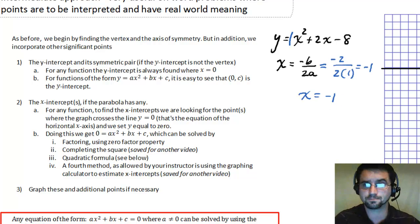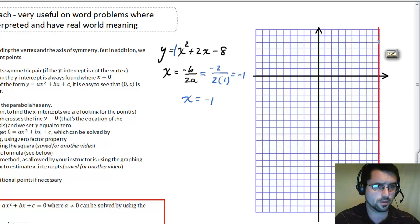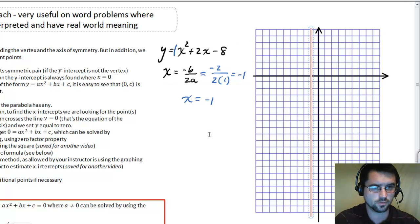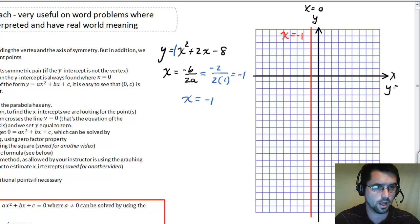So the equation of the axis of symmetry is x equals negative 1. So that's a vertical line, and I have a vertical line already prepared. It's right here, and I'm going to move it to where x equals negative 1. There it is. Right there, every point on that line, x equals negative 1. So let me label it x equals negative 1. Here's the y-axis, a.k.a. x equals 0, and here's the x-axis, also known as y equals 0. So we found the axis of symmetry.